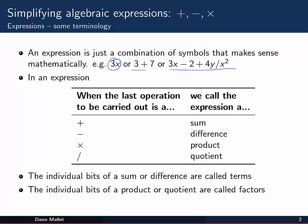In an expression, when the last operation to be carried out is an addition, we call that expression a sum. Similarly if the last operation is subtraction we call it a difference. When the last one to be carried out is multiplication, we call that a product. And when the last thing to be done is a division we call it a quotient.